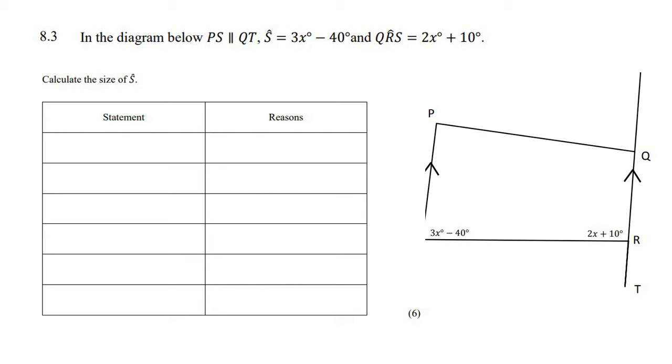In the diagram below, PS is parallel to QT. They tell us that angle S is 3x minus 40 and angle QRS is 2x plus 10. They say calculate the value of angle S.